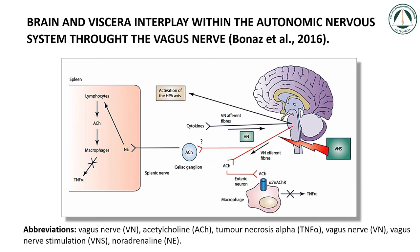Understanding of these pathways is interesting from a therapeutic point of view, since they could be targeted in various ways to stimulate anti-inflammatory regulation in tumor necrosis alpha-related diseases, such as inflammatory bowel disease and rheumatoid arthritis. Among others, vagus nerve stimulation, either as an invasive or non-invasive procedure, is becoming increasingly frequent, and several clinical trials are ongoing to evaluate the potential effectiveness of this therapy to alleviate chronic inflammation.